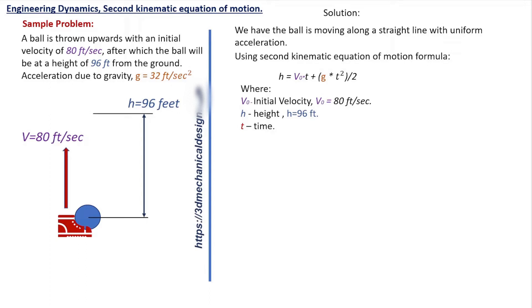96 equals 80 times T minus 32 times T squared divided by 2. 192 equals 160 times T minus 32 times T squared.